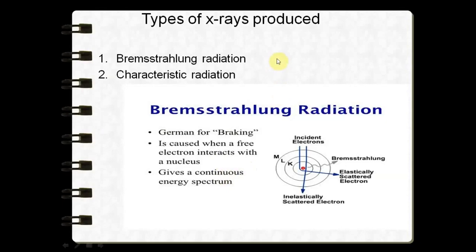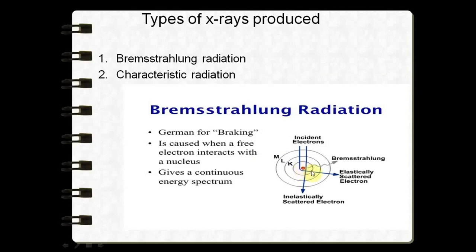Two types of x-rays are produced: bremsstrahlung radiation and characteristic radiation. Bremsstrahlung radiation comprises around 70% of the x-rays produced. 'Bremsstrahlung' is a German term meaning 'braking,' referring to the sudden braking of high-speed electrons when they hit the tungsten target in the anode. The incident electron is attracted towards the positively charged nucleus, slows down near the nucleus, and releases an x-ray photon.